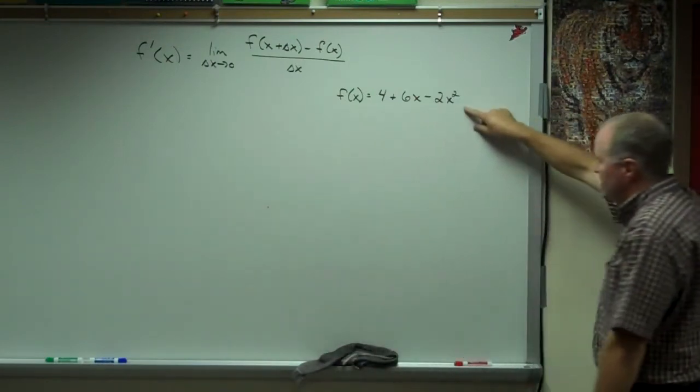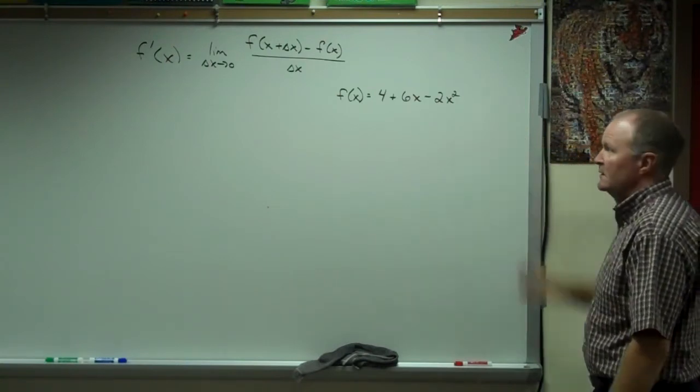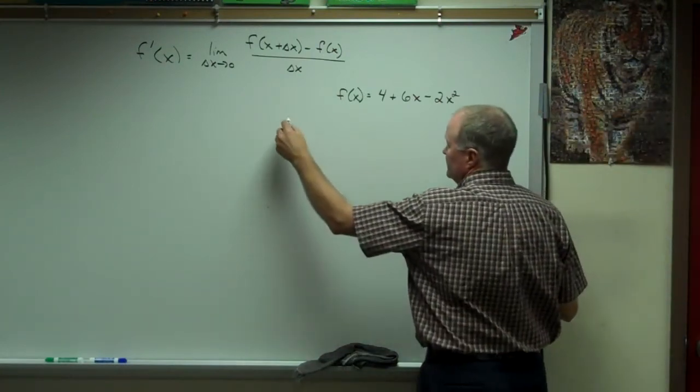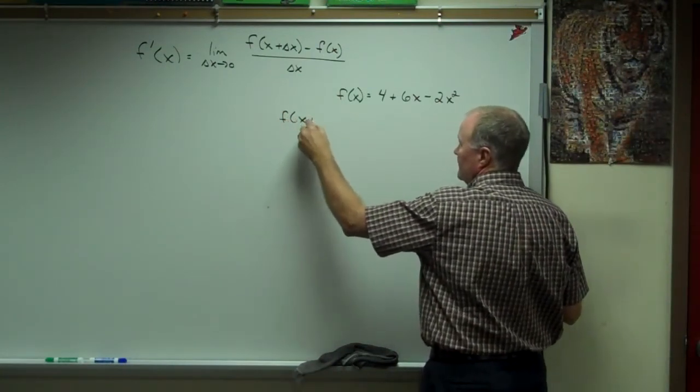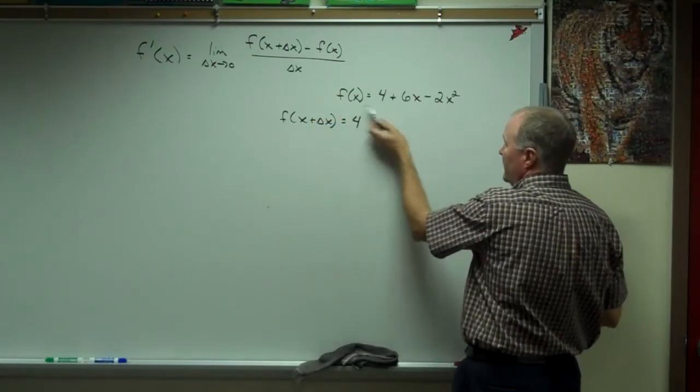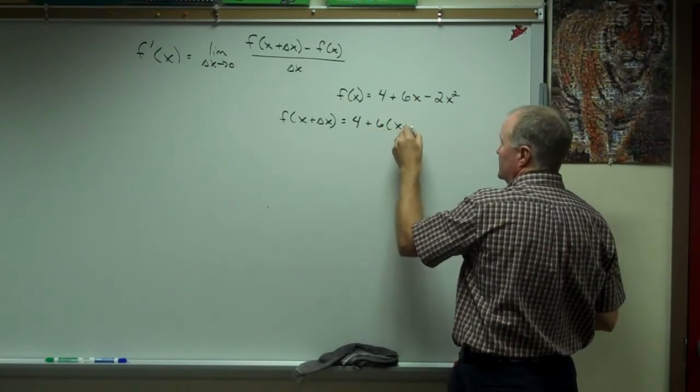If f of x is this, 4 plus 6x minus 2x squared, I need to find f of x plus delta x. And the way that works, you plug it into the f of x, wherever you see x, is x plus delta x.